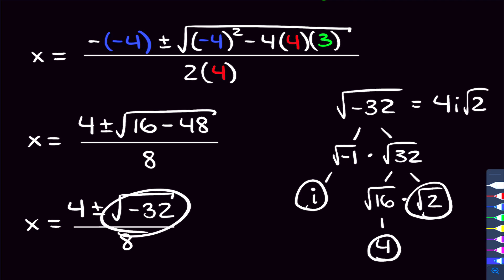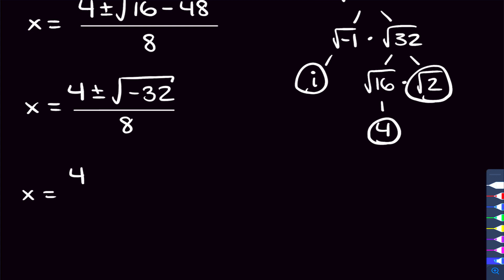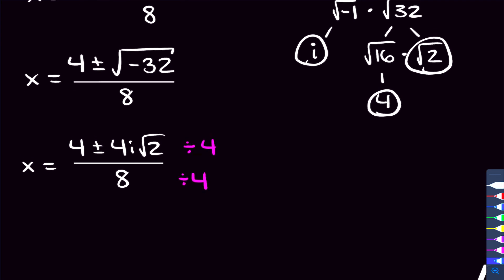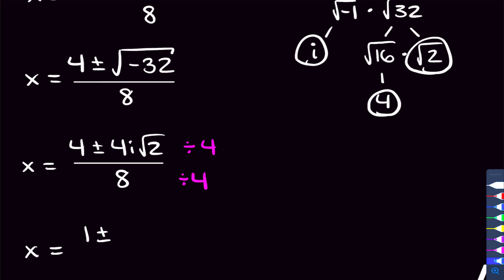Now we plug that in: x equals 4 plus or minus 4i times the square root of 2, over 8. And we're not quite done yet — every single term is a multiple of 4, so we can divide top and bottom by 4. Doing that: 4 divided by 4 is 1, 4i root 2 divided by 4 is i times the square root of 2, and 8 divided by 4 is 2. So the final answer is 1 plus or minus i times the square root of 2, all over 2.